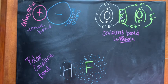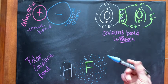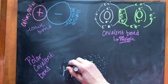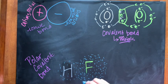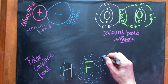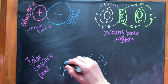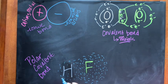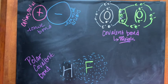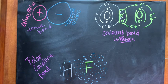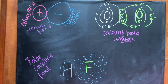In general, the electrons tend to hang out a whole lot more around fluorine than they do around hydrogen — they are much more attracted to fluorine. What happens then is we end up with partial charges.